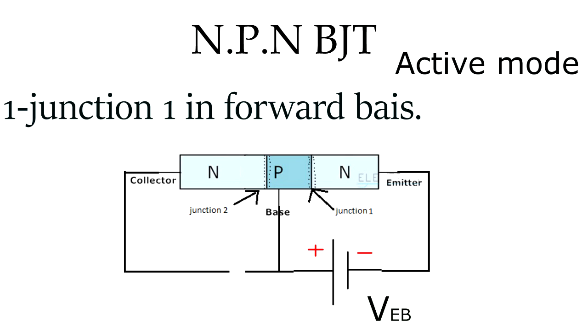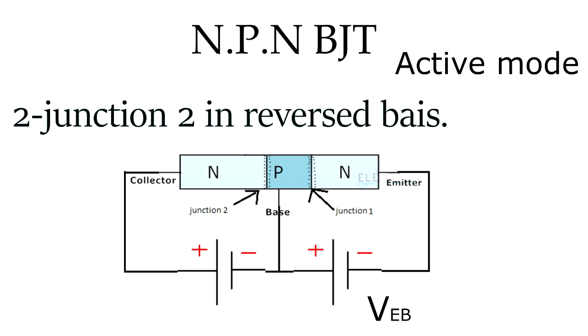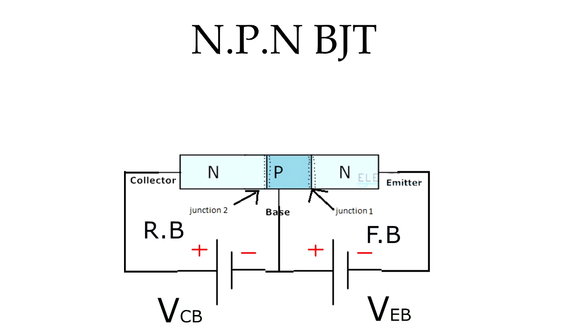We have to make junction two reverse bias, so C is connected to the positive terminal and P is connected to the negative terminal. This reversed potential is called VCB. Now we have junction J1 forward bias and junction J2 reverse bias, and that's what we need to make it in active mode. Let's analyze the movement of electrons in the BJT.